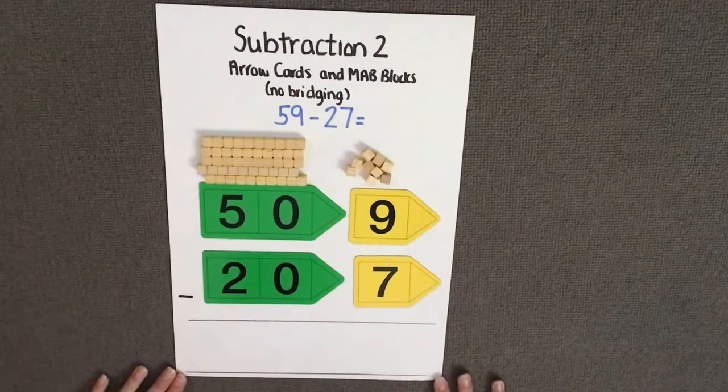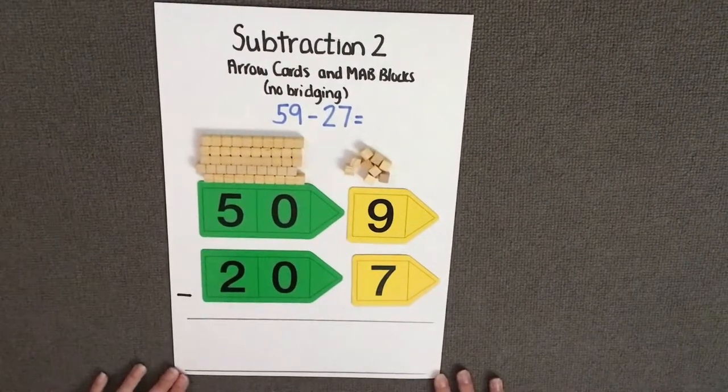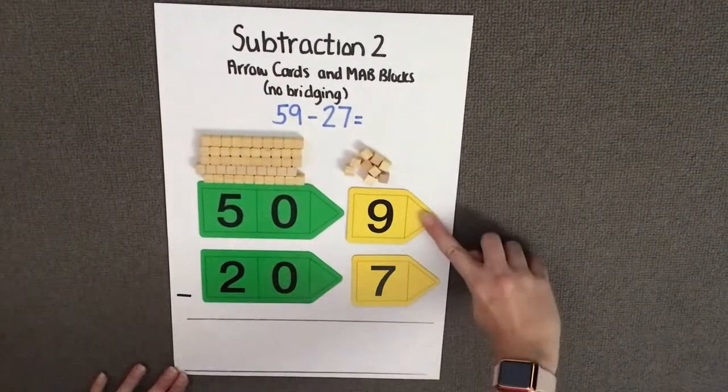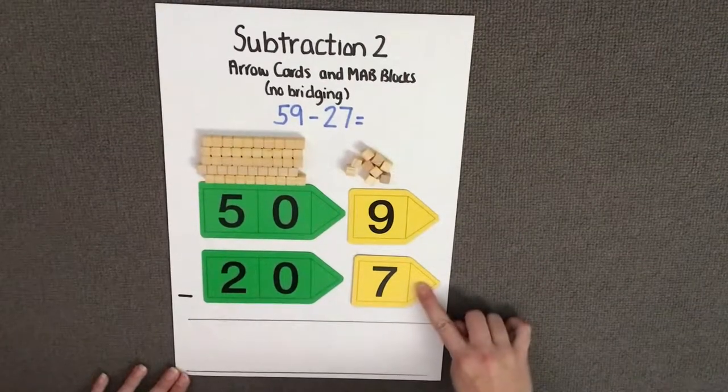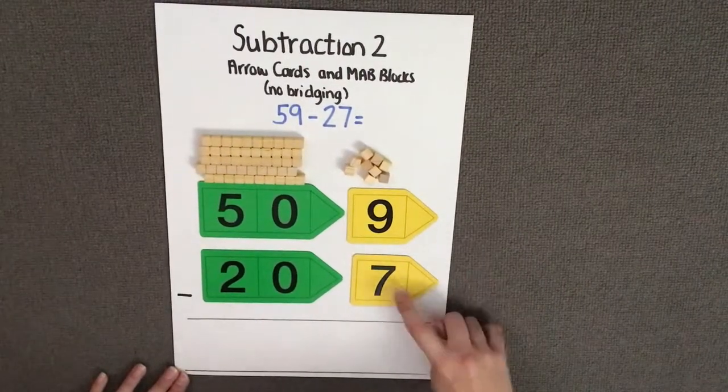Now we can start to subtract. We need to start subtracting with our ones. I have 9 ones and I'm going to take away 7 ones. We need to remove 7 blocks.